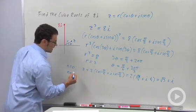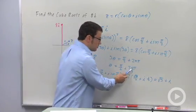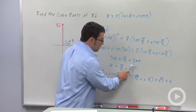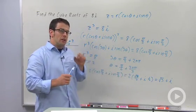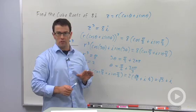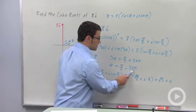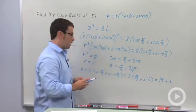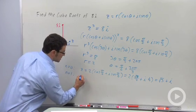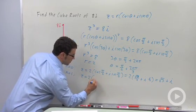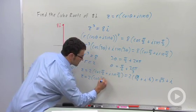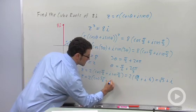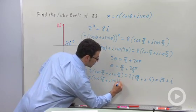Now I get a second root if I let n equal 1. If n equals 1, then I'm adding 2 pi over 3 to pi over 6. 2 pi over 3 is the same as 4 pi over 6. So 4 pi over 6 plus pi over 6 is 5 pi over 6.